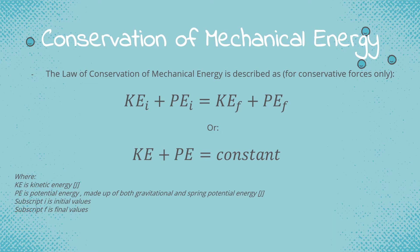At the bottom, just a look at the nomenclature: KE represents kinetic energy, PE represents potential energy, subscript i is initial, and subscript f is final.